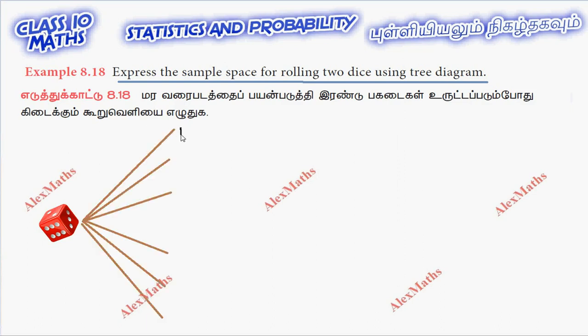The first die can show: 1, 2, 3, 4, 5, 6.